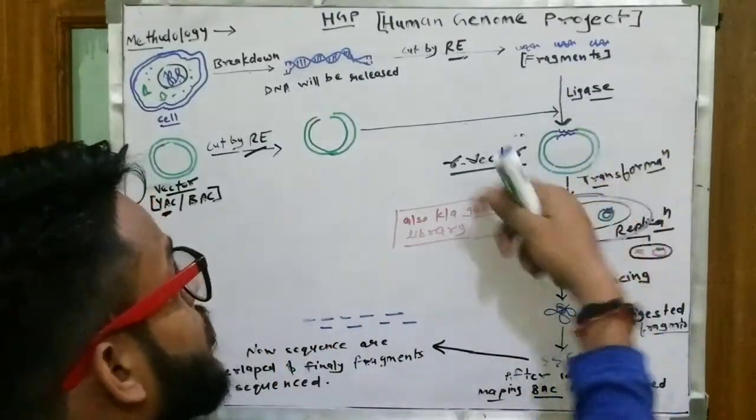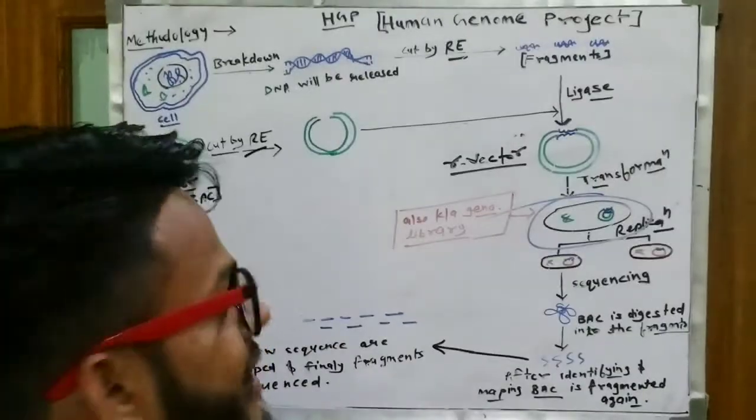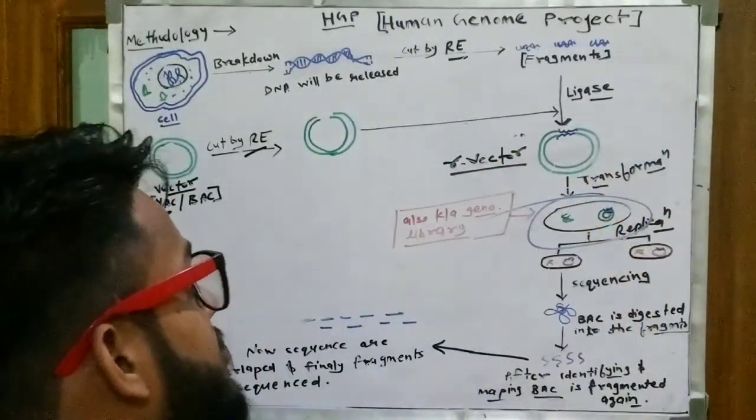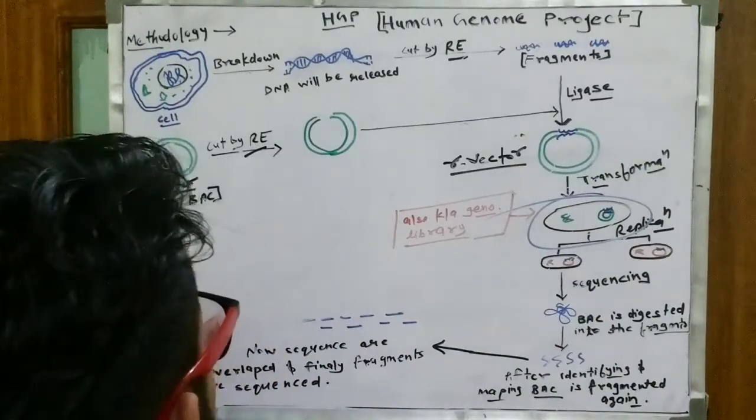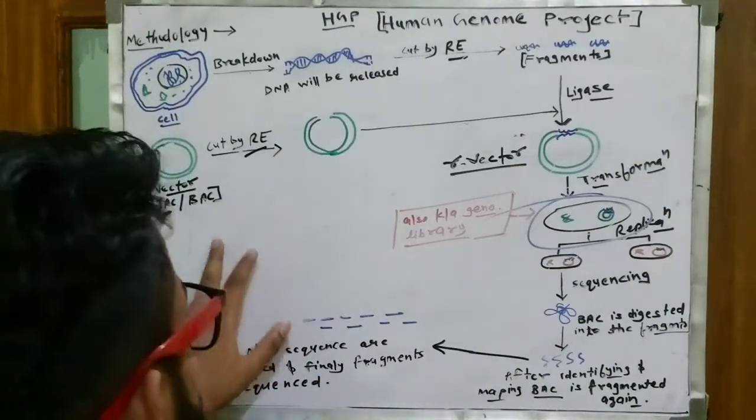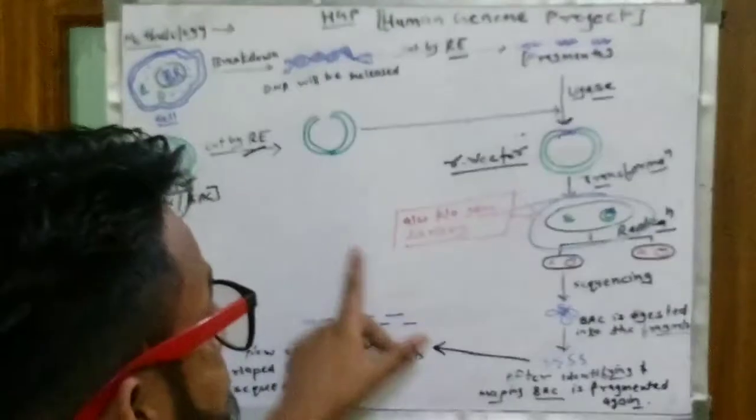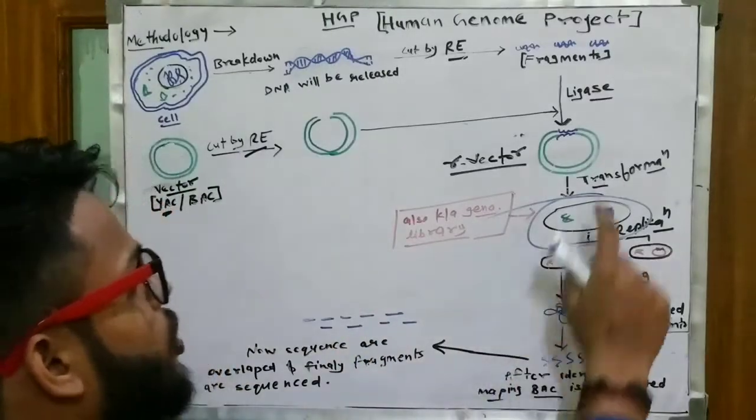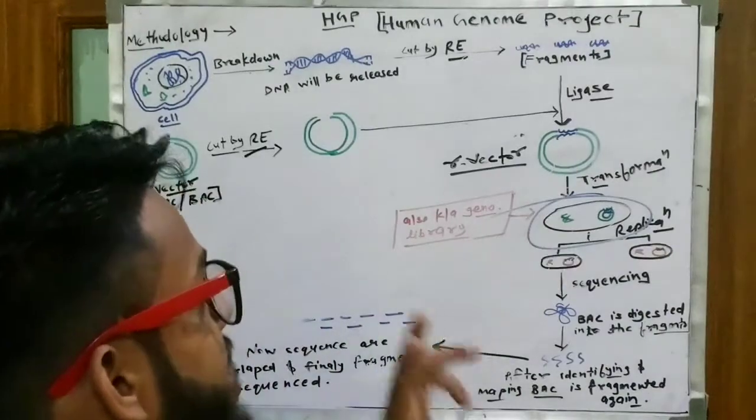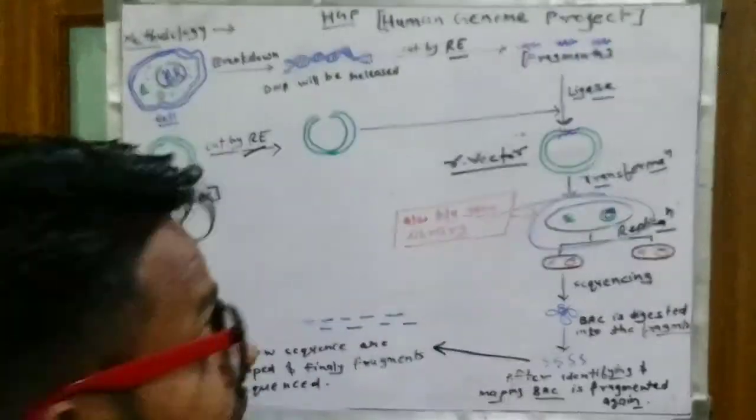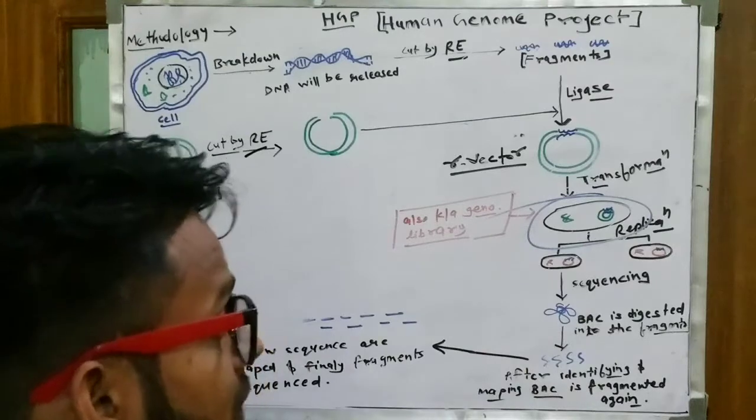Where the fragments have been cut, we can ligate them. Now we have to ligate our desired gene inside the vector. Now my recombinant vector has formed.